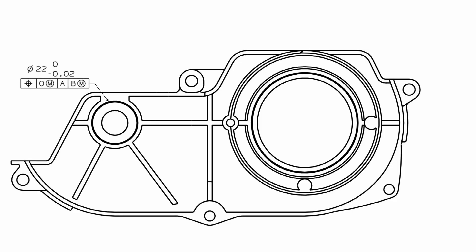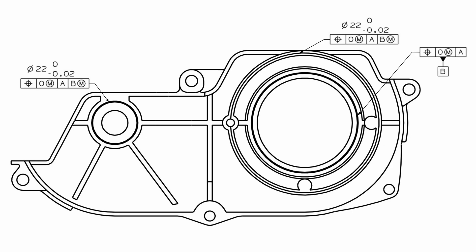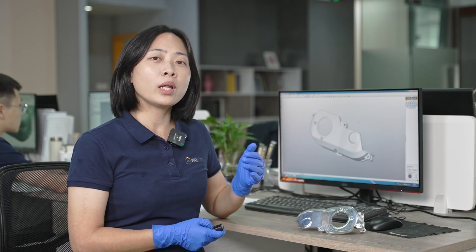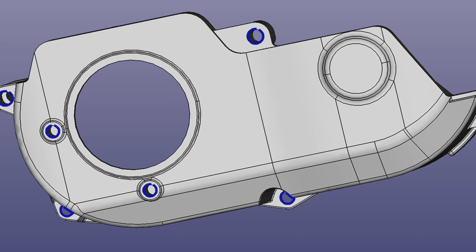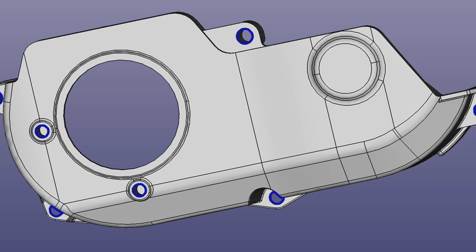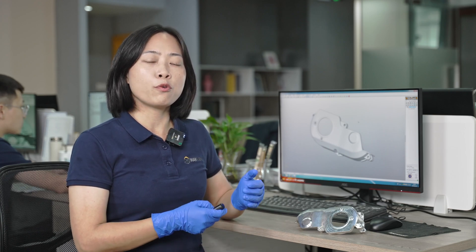Three strict positional tolerance requirements have been marked in the corresponding areas. Of course, in addition to these few holes for connecting the bearings, if we look at the 3D files again, we can see that there are eight small holes around the edge of this part. Based on our experience, these holes are either used for positioning or fixing.